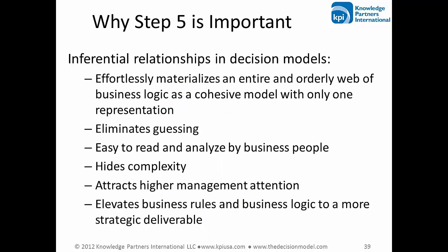Once you take a decision table and convert it to a rule family, and start looking at new conclusions that can be realized by other logic, you move into the realm of model management. Step five is a breakthrough in managing logic in a model of its own. The inferential relationships are only possible if each table has only one conclusion column — otherwise you end up with a spaghetti model. Step five is important because it makes sure inferential relationships effortlessly materialize the entire web of business logic as a cohesive model, not a set of individual decision tables. It eliminates guessing, is easy to read by business people, hides complexity, attracts higher management attention, and elevates business rules to a more strategic deliverable.